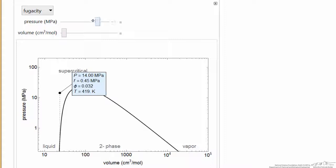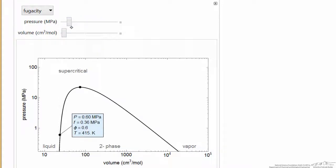if I were to decrease the pressure, eventually I'd get close to the phase envelope. Now the fugacity is much closer to the pressure. So you can use this interactive simulation to give you a better feeling for how fugacity changes. Keep in mind